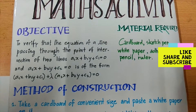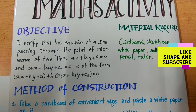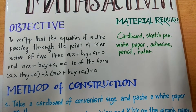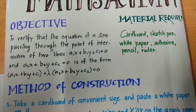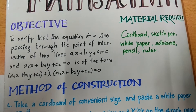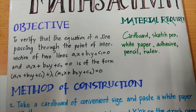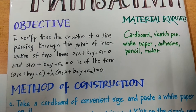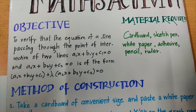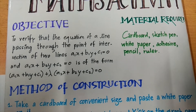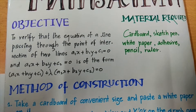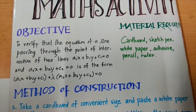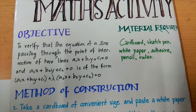The objective of my activity is to verify that the equation of a line passing through the point of intersection of two lines a1x plus b1y plus c1 equals to 0 and a2x plus b2y plus c2 equals to 0 is of the form a1x plus b1y plus c1 plus lambda into a2x plus b2y plus c2 equals to 0.